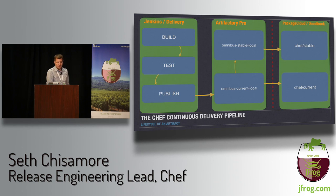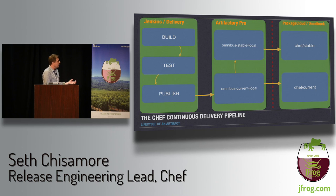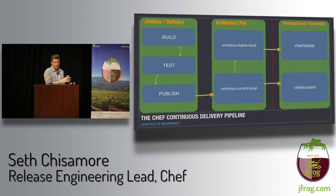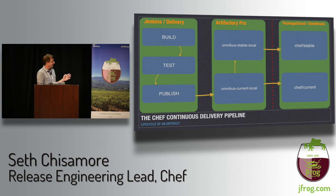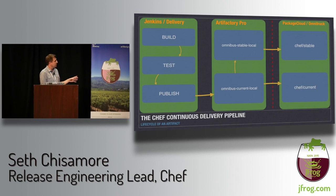The blue boxes represent stages that an artifact flows through. In the build stage, we use Omnibus to compile to a deployable package. Artifacts generated by the build stage are installed on all supported platforms, and an integration test suite called Pedant is executed against those installs. If a build passes Pedant testing for all supported platforms, we publish the artifacts out to Artifactory — specifically the Omnibus current local repo — representing the current channel. Anything in the current channel can be thought of as a release candidate for the stable channel.